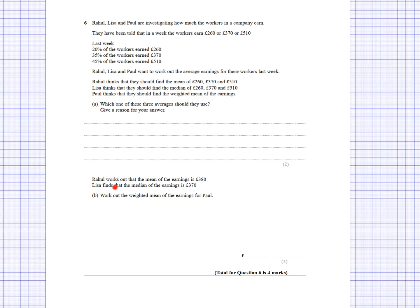Rahul works out the mean of the earnings as £380. Lisa finds the median is £370. To work out Paul's weighted mean, multiply £260 by 0.2, £370 by 0.35, and £510 by 0.45, then add them all up. Alternatively, multiply by 20, 35, and 45 respectively, add them up, then divide by 100.